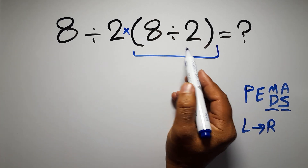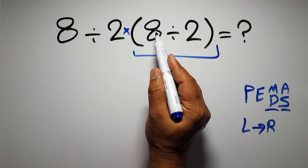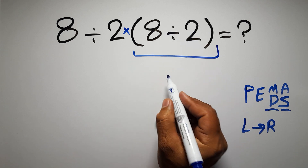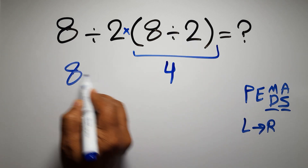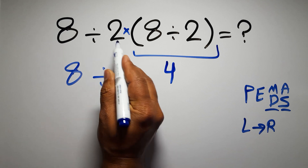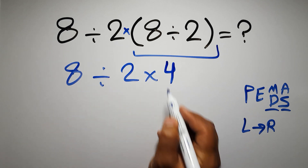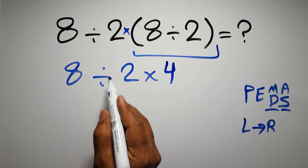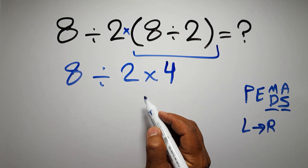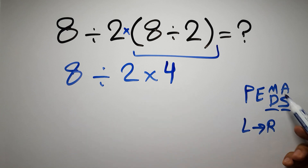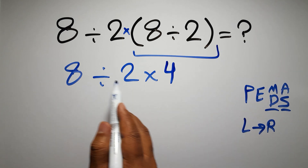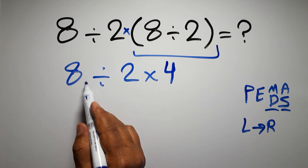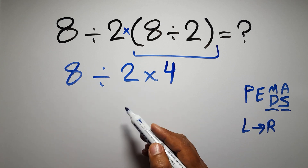So, first we handle the parentheses. Inside the parentheses, we have 8 divided by 2, which equals 4. Now we have 8 divided by 2 times 4. We have one division and one multiplication. As I said, multiplication and division have equal priority, and we have to go from left to right. So here, first we have to do this division, not this multiplication.